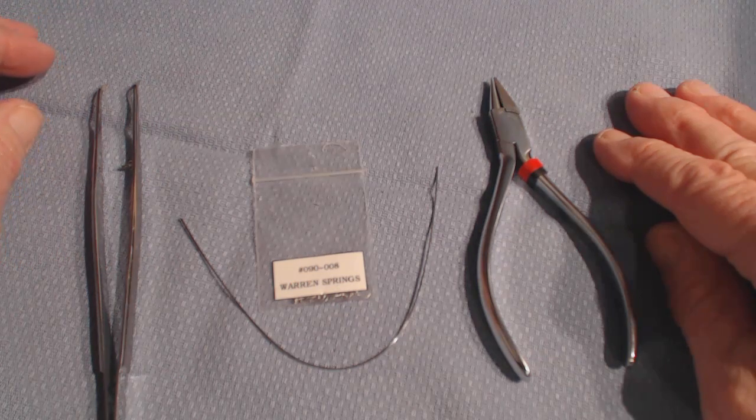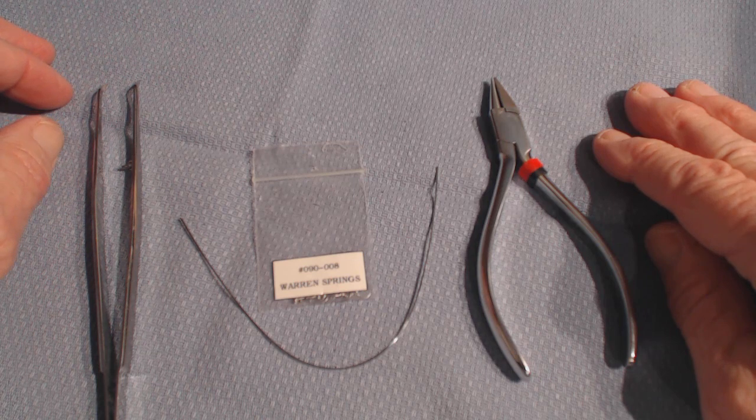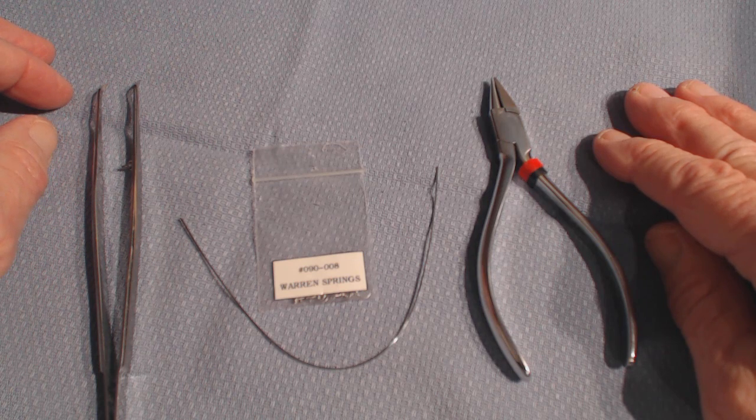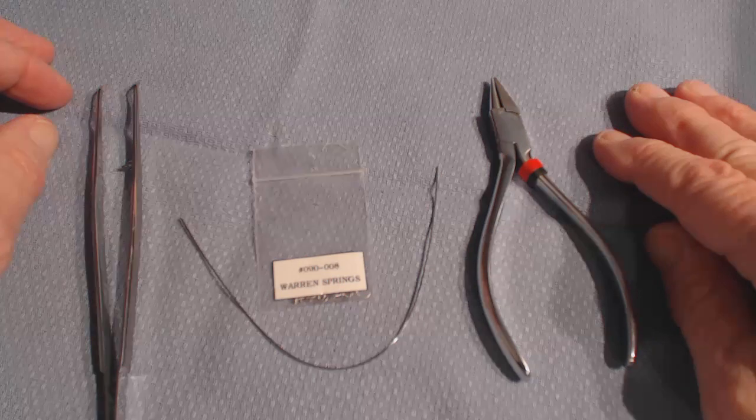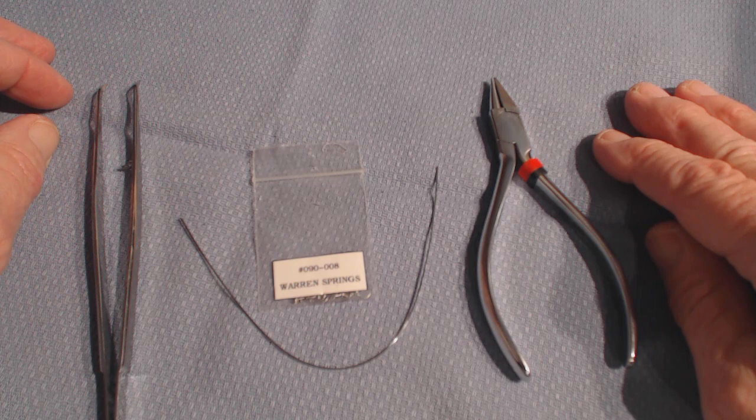It's way better than trying to cause a twist in an arch wire, because 19 by 25 is way too strong, and it's not an effective torquing arch, if you will. This works much better because it has such a longer lever arm than your twist in the wire.